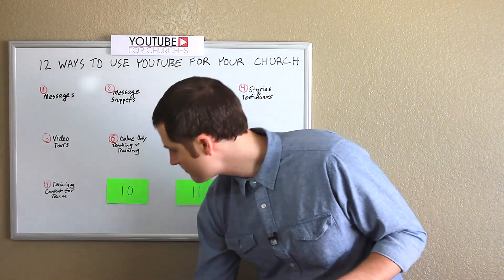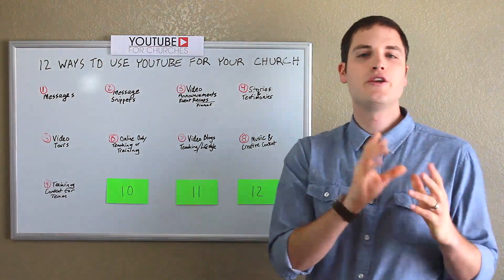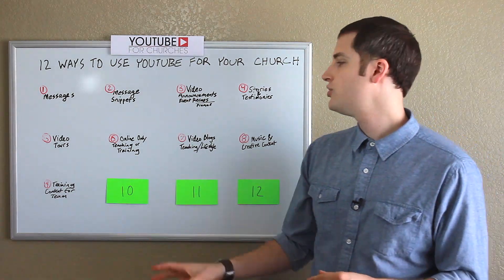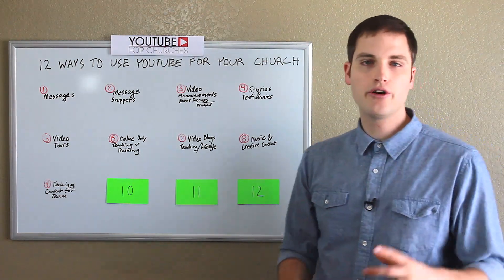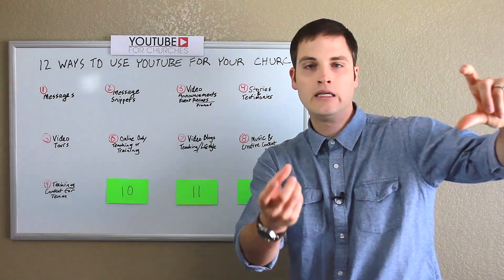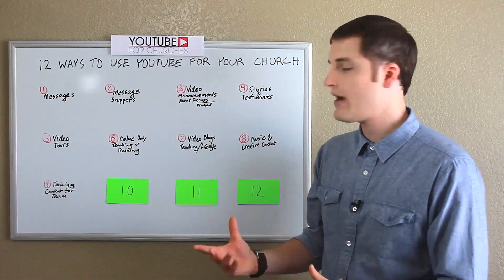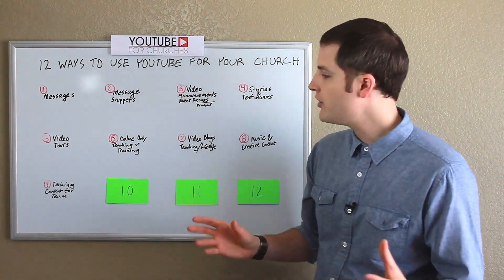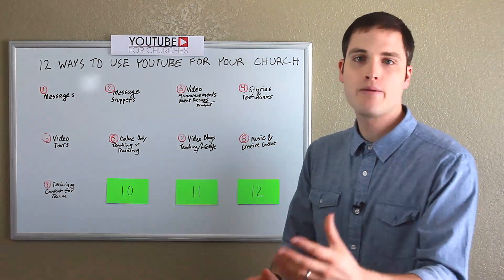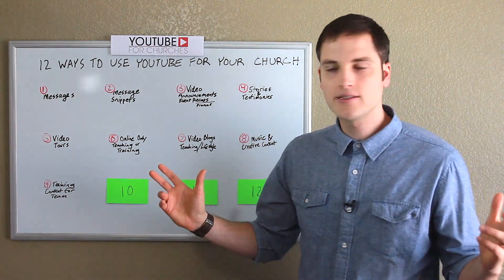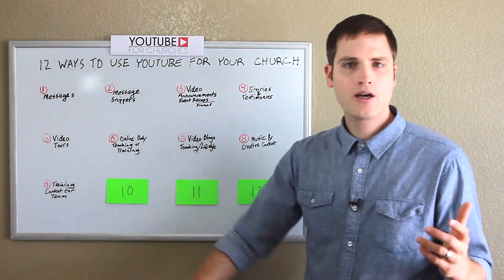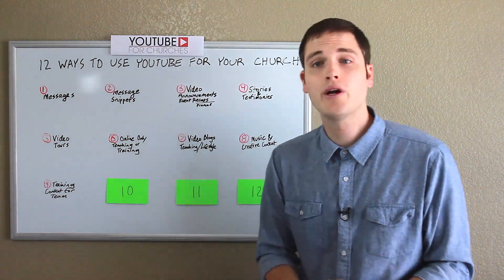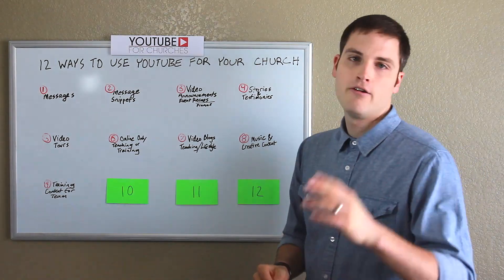Number nine is training content for your team. YouTube allows you to make videos unlisted or even private, and you could shoot content that's just in-house. It doesn't have to be hard — literally just turn your phone and say, "Hey, here's how everything needs to be turned on for the weekend." You walk around and film the power switches, the checklist to turn off. Shoot training content, upload it, unlist it, and then just email it or text the link to a few team members so they can open it on their smartphone.